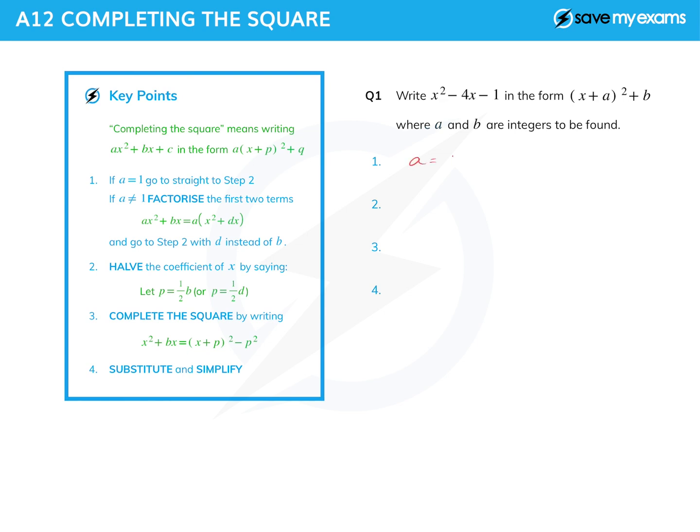So let's write down a equals 1, b equals, well, that's the number in front of the x, so that's minus 4, sometimes known as the coefficient of x, and c is the number term. So I've got a is 1, b is minus 4, and c is minus 1. So looking at the steps, I can actually go straight to step 2 here. I don't need to worry about it because I've got a equals 1. We'll deal with the rest of step 1 in a harder question.